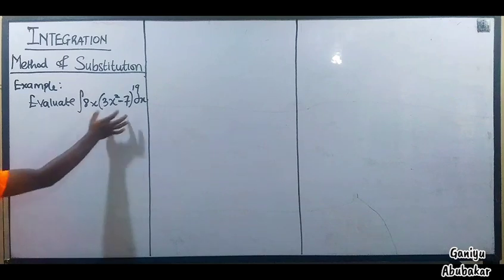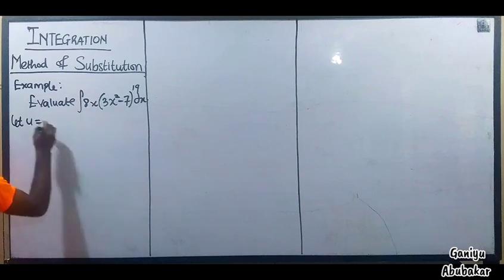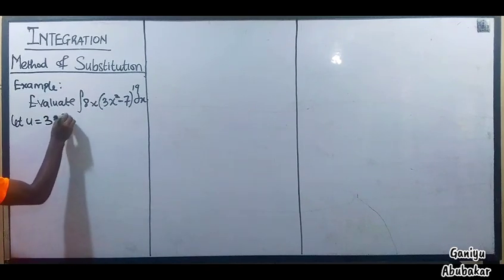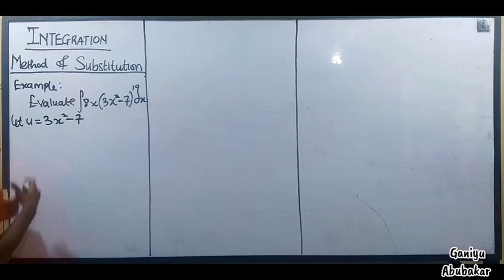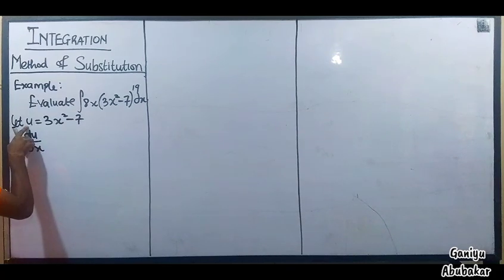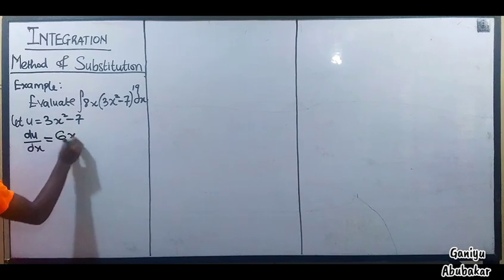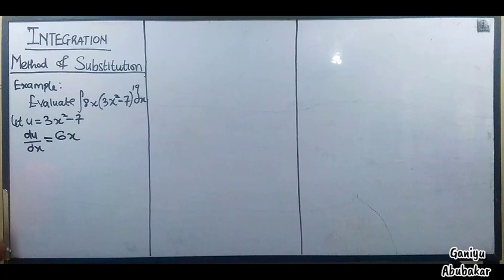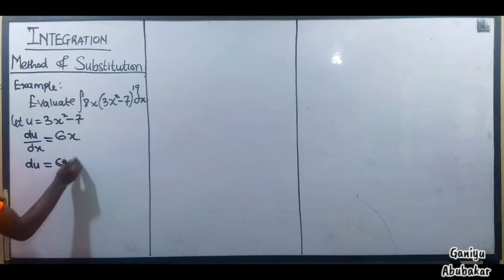First, I will call the expression in brackets u. Let u be equal to 3x² - 7. If I differentiate this using the concept of the general method of differentiation, I will have that du/dx is equal to 6x.